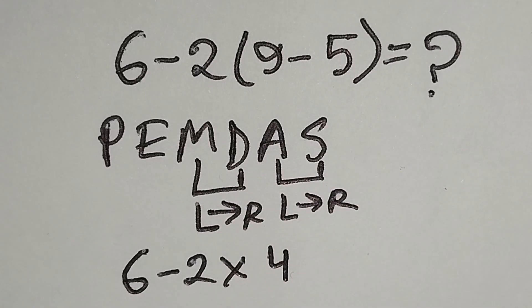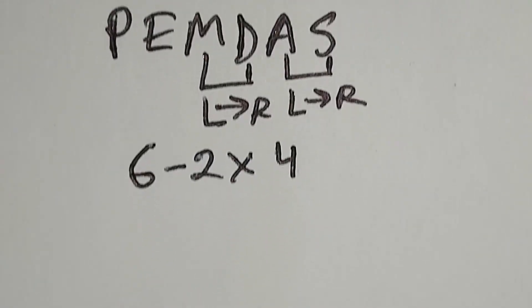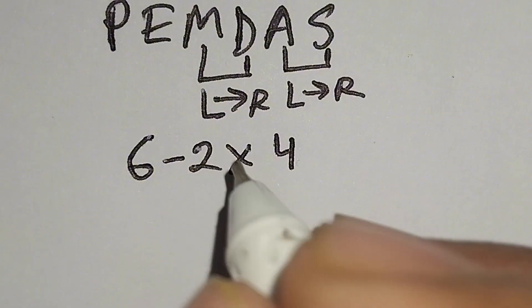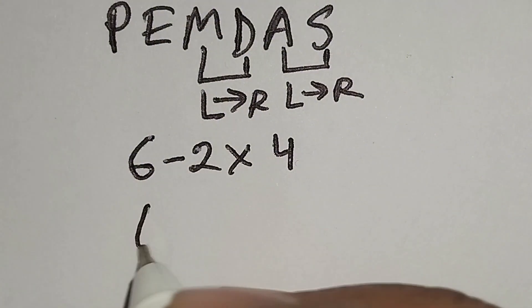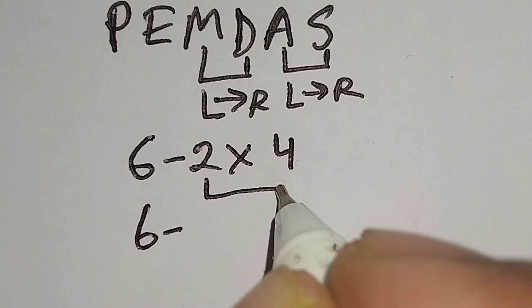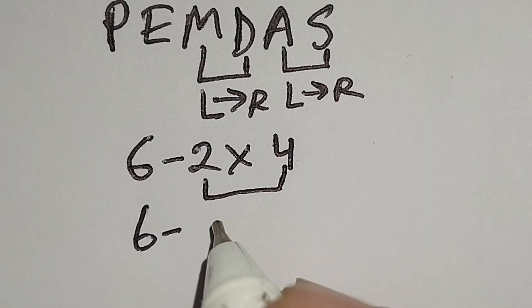Now I have to work with this multiplication. Here, 6 minus this 2 times 4 gives us 8.